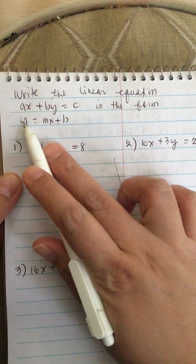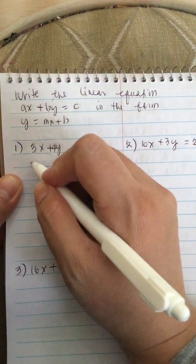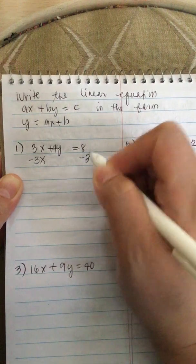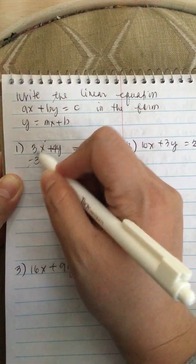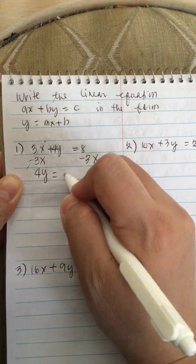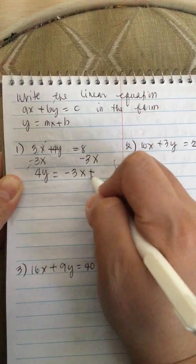So we solve for Y. We put this 3X on the other side, so now it's gone. We have 4Y is equal to minus 3X plus 8.